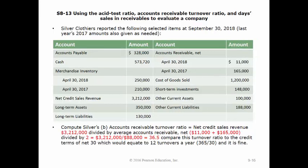The second ratio we calculate for Silver Clothiers is the accounts receivable turnover. We need the average accounts receivable for 2018: we take the beginning balance of $165,000 and the ending balance of $11,000, add them together, and divide by 2, to get $88,000. We then divide net credit sales revenue of $3,212,000 by $88,000, and get the accounts receivable turnover ratio of 36.5. Since our credit terms are net 30, we would expect to collect the average balance about 12 times a year, so the turnover ratio of 36.5 is much higher, which is good.